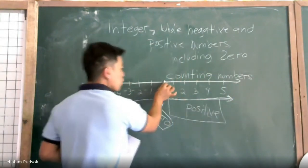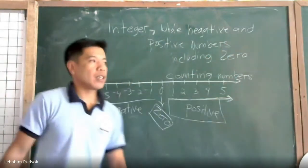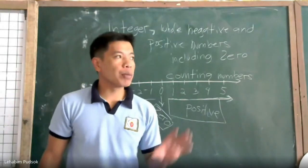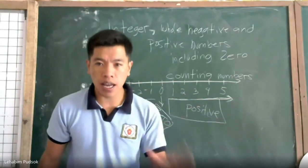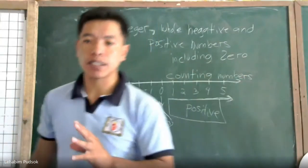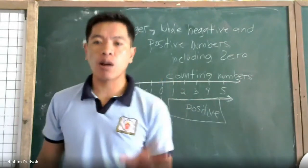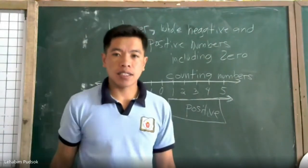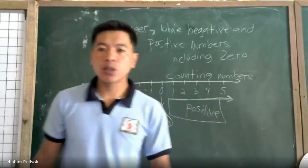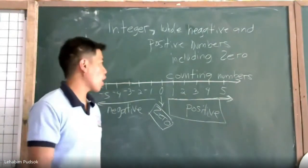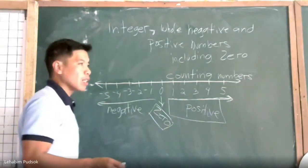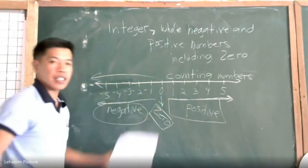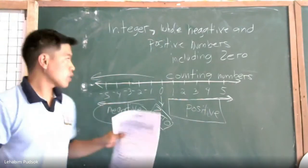From one going to the right — one million, two million, three million — they are called the counting numbers. Counting numbers are the numbers we use in our daily life, like when counting money or counting buildings in your area. If you are paying for something, you are using counting numbers. Counting numbers do not include zero or the negative numbers going to the left.